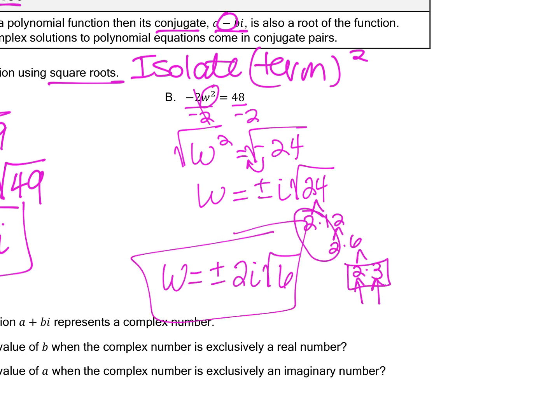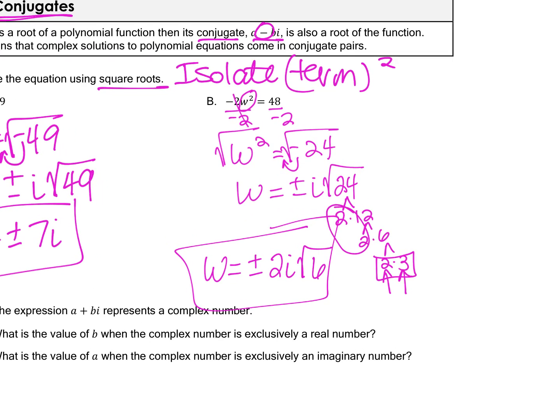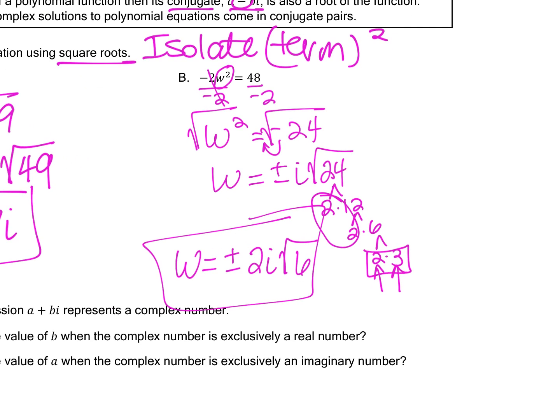When solving these using the square root method, isolate the squared term, then take the square root. Some results have negatives under the radical, so use i and simplify the positive radical. If you have any questions, let me know.